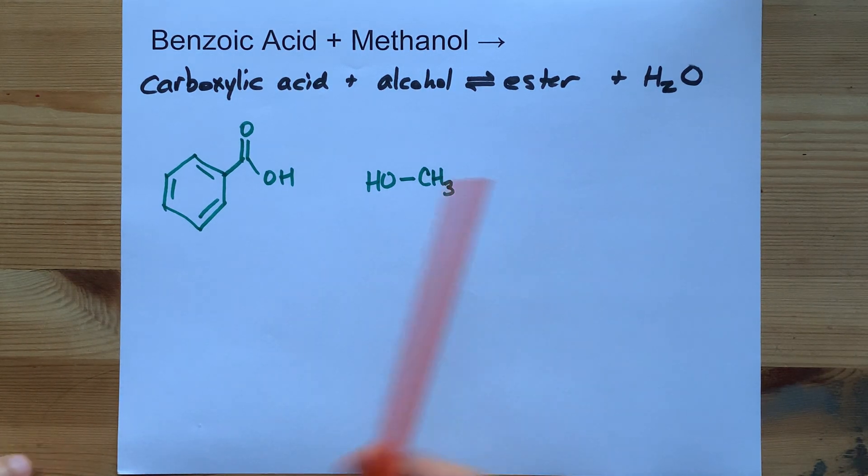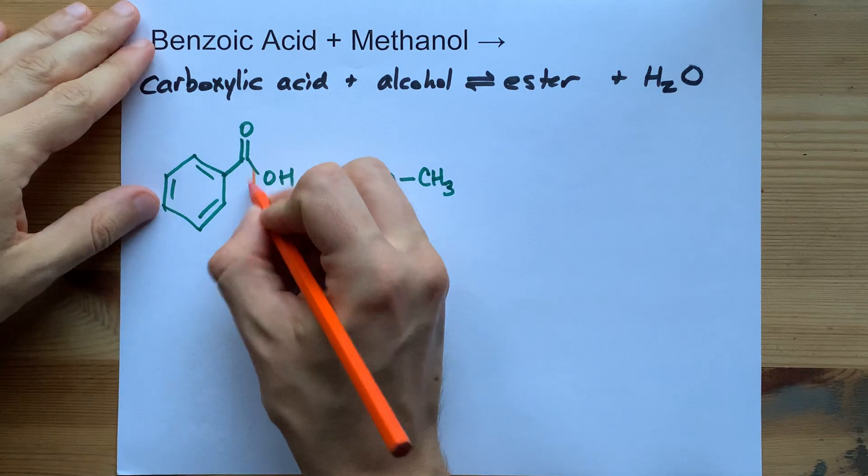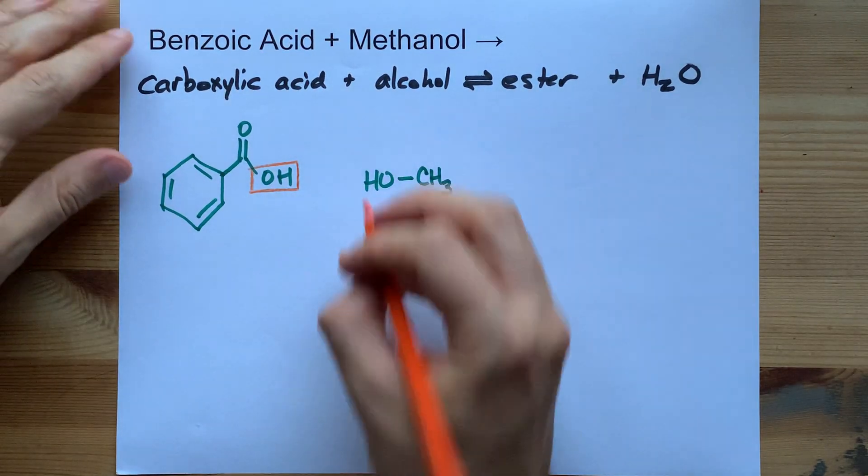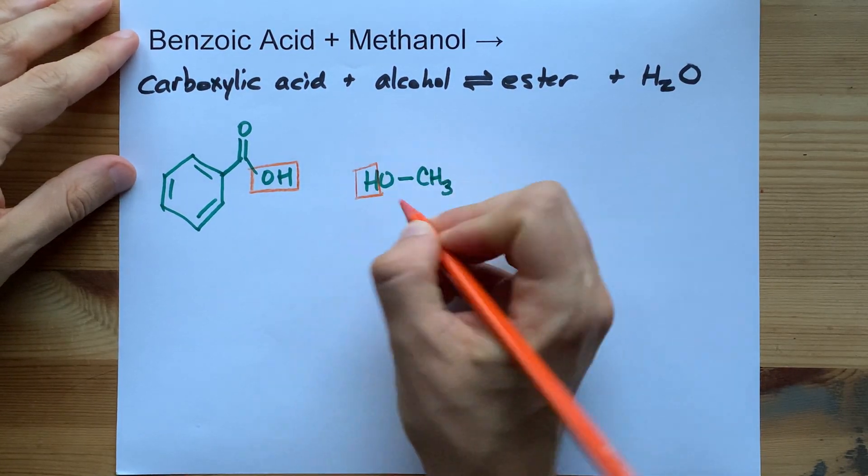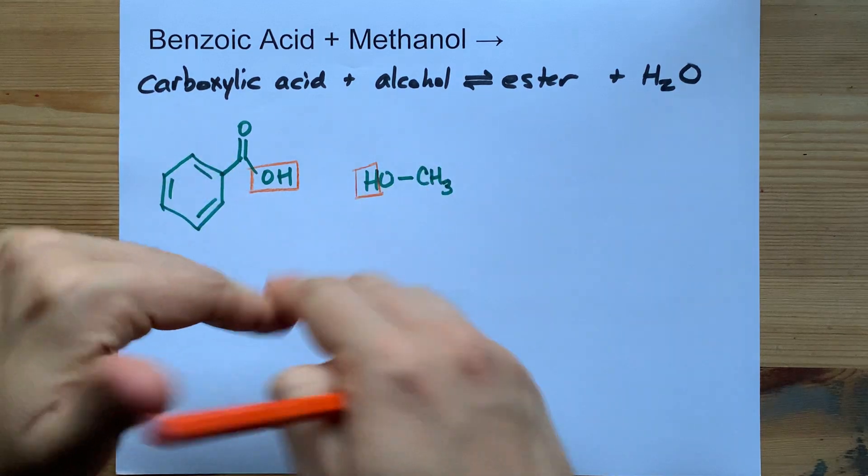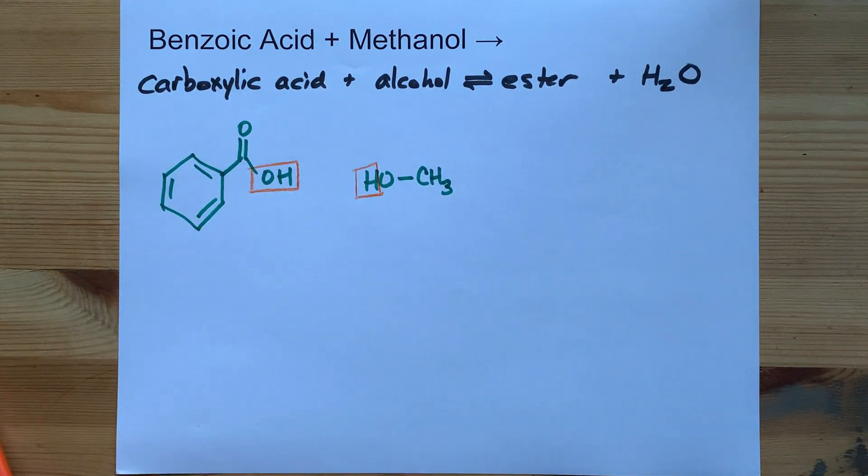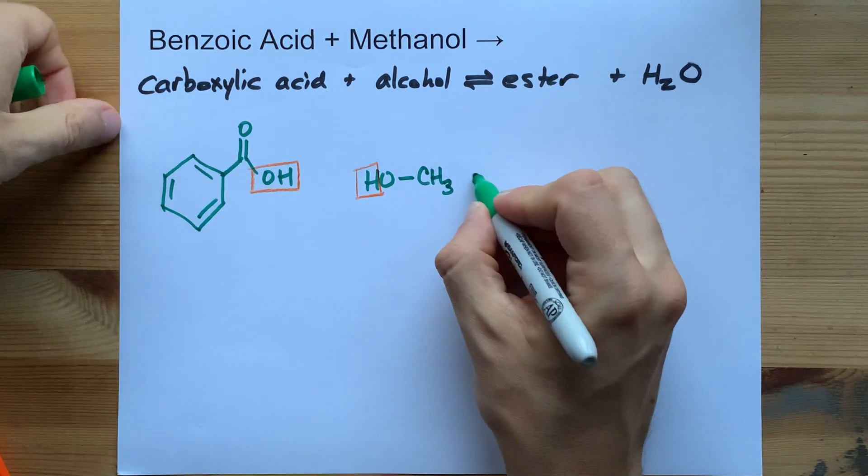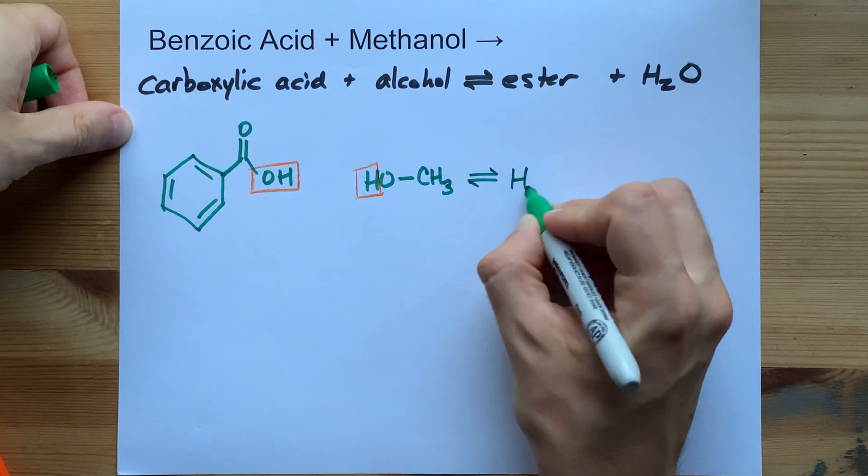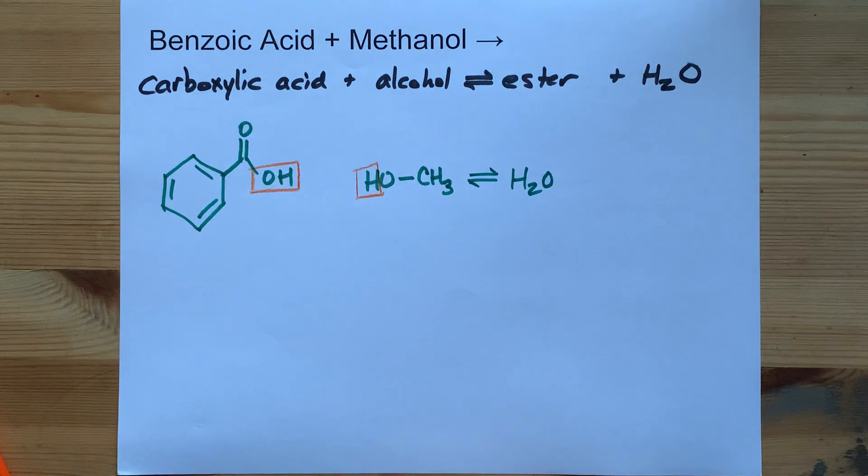Now the way that esterification reactions work, the OH from the acid and the H from the alcohol end up together. It's actually like a five or six step reaction, but they do end up together. And you end up with water. Well, I guess you knew that already.